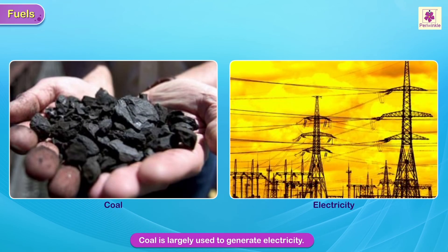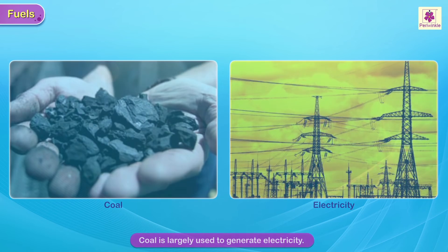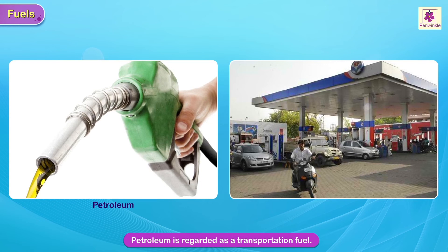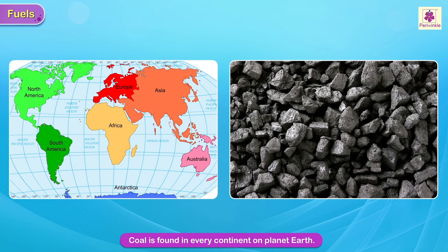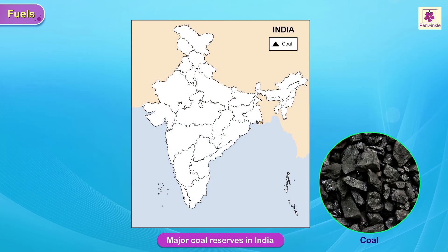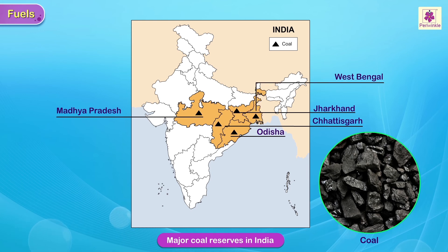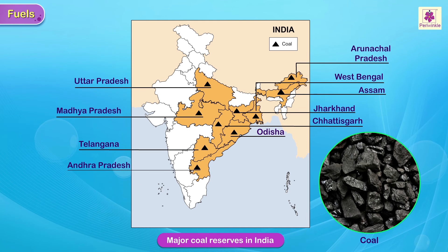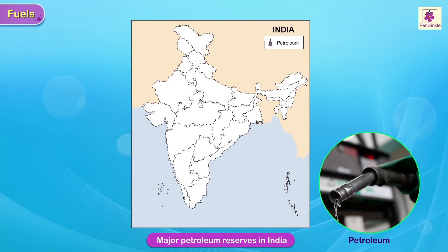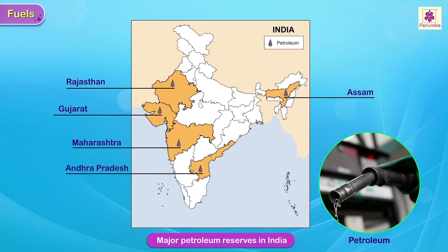While coal is largely used to generate electricity, petroleum is regarded more as a transportation fuel. Almost half the known reserves of oil are in the Middle East. Coal is found in every continent on planet Earth. Major coal reserves in India are in Odisha, Madhya Pradesh, Jharkhand, Chhattisgarh, West Bengal, Telangana, Andhra Pradesh, Assam, Arunachal Pradesh and Uttar Pradesh. Major petroleum reserves in India are in Rajasthan, Gujarat, Maharashtra, Andhra Pradesh, Assam and Arunachal Pradesh.